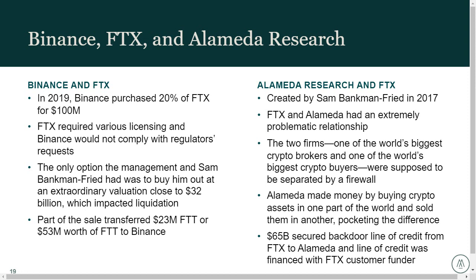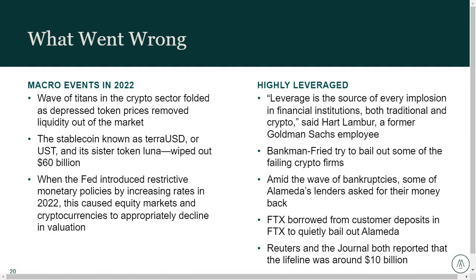The second key relationship was with Alameda Research, which was created by Sam back in 2017. If these two had been publicly traded or in a regulated environment, there would have been an ironclad firewall between the two entities, and some of the transactions happening between them wouldn't have occurred. Alameda Research was in a liquidity crunch, and basically FTX bailed them out through lines of credit — providing customer deposits as collateral for loans, or transferring customer deposit accounts to Alameda Research for their purposes. The relationship between Alameda Research and FTX was problematic from the start.